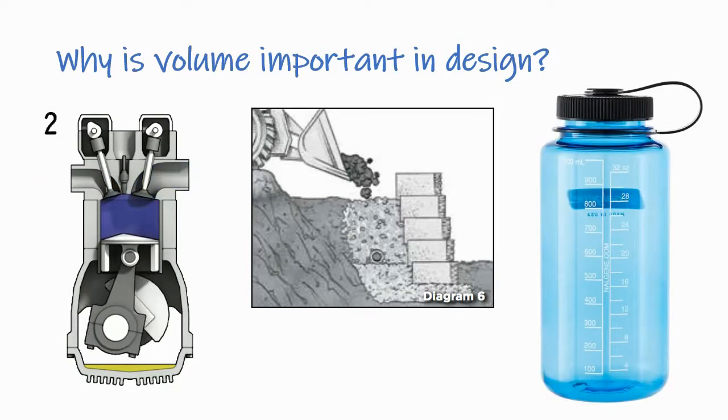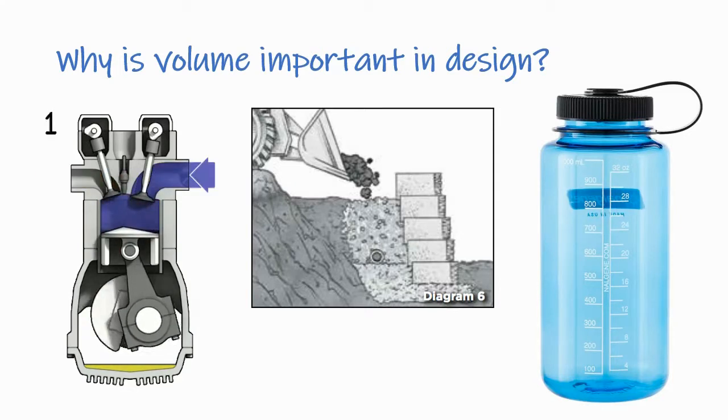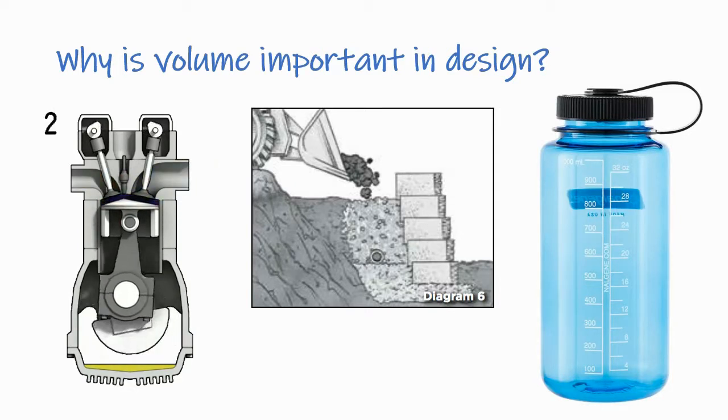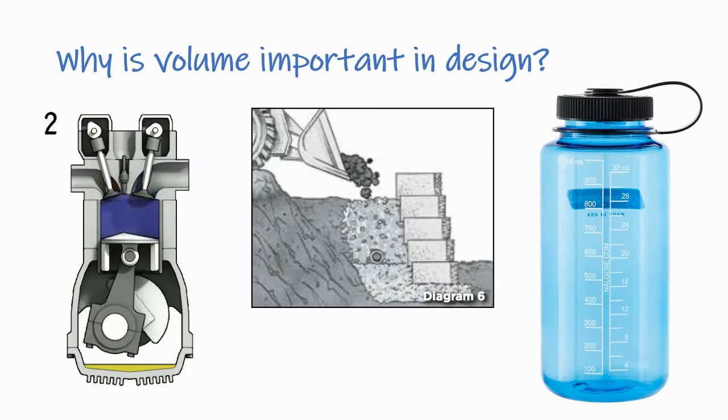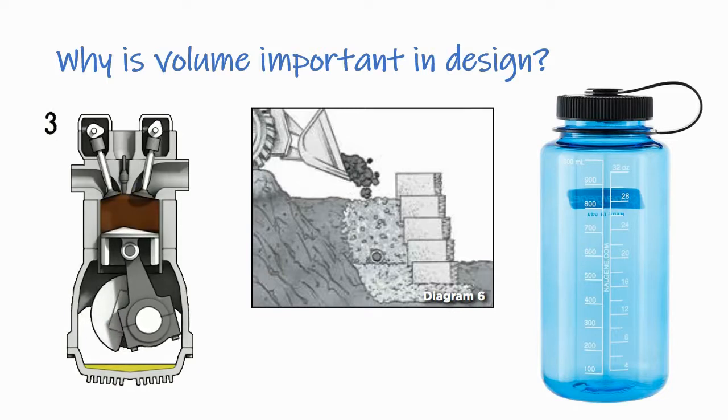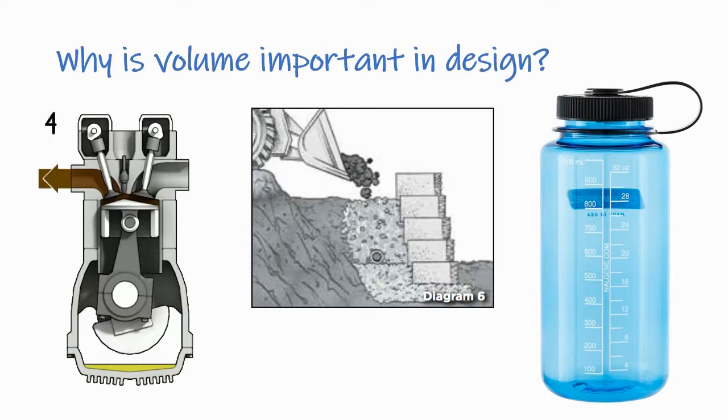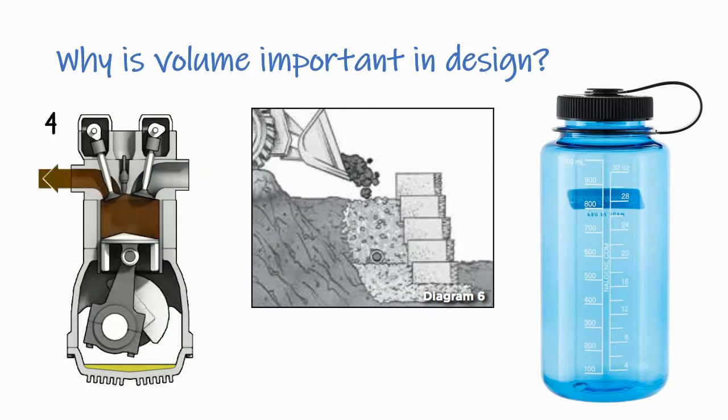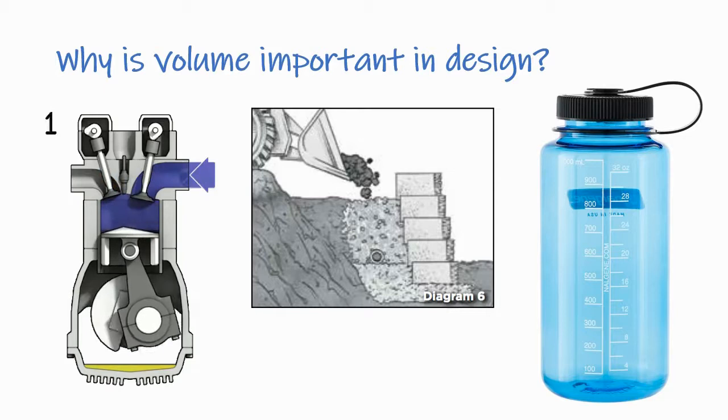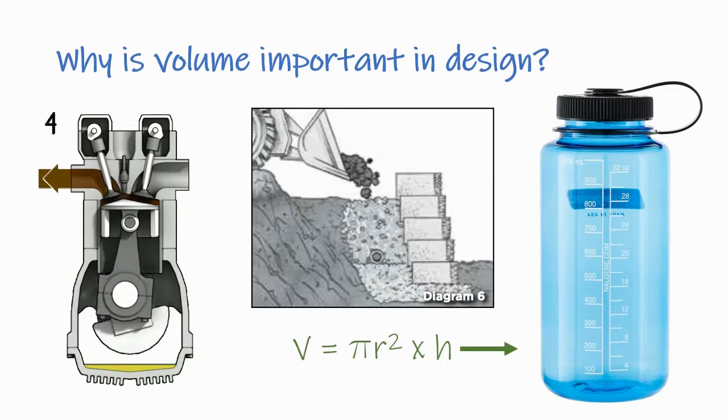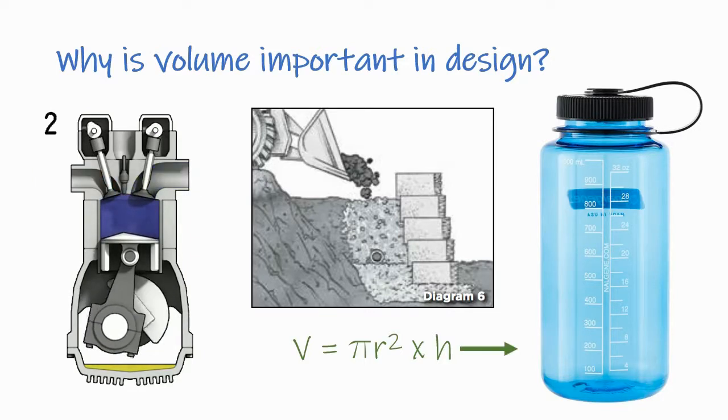When designing products or packaging that must contain a specific volume of material, designers use volume formulas in reverse to figure out the dimensions needed for a product. For example, if a designer is creating a water bottle to hold 32 ounces of water, she might need to convert 32 ounces into a different unit of volume that includes distance units such as cubic centimeters or cubic inches. If the bottle is going to be a cylinder, she could use the known volume in cubic centimeters to figure out what radius and height the cylinder should have.